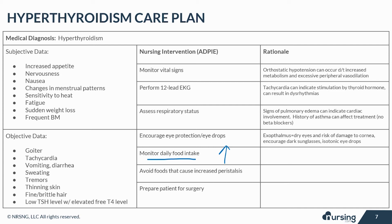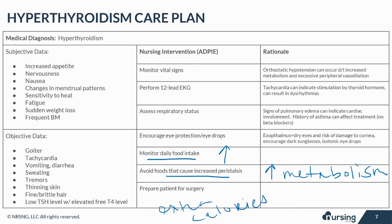Teach your patient to avoid foods that cause loose stools and peristalsis, as increased metabolism also increases intestinal motility, which can lead to diarrhea and impairment of nutrient absorption. The patient should incorporate extra calories, protein, carbohydrates, and vitamins into six small meals throughout the day, and even possibly consult with a dietician.